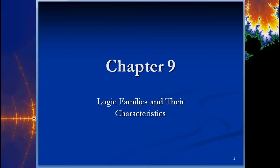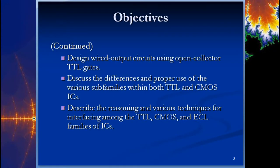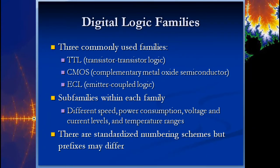We are going to start with chapter 9. We're going to talk about the different logic families more so than we did in 112, and we're going to look at what the output from a CMOS chip actually is — the output is not actually zero or five volts. In 112 we assume zero and one, zero volts and five volts, but really it's more like zero to 0.8 volts for TTL and about 2.4 volts to five volts for a high.